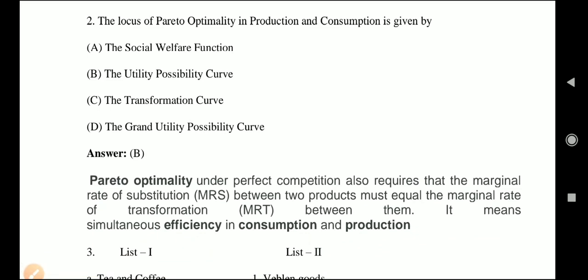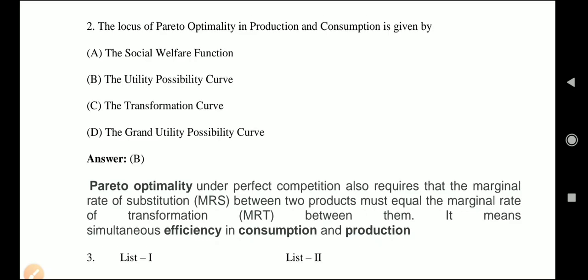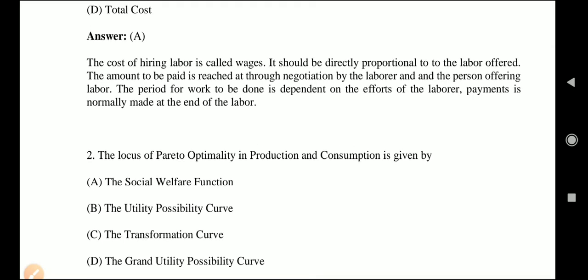Next question: the locus of Pareto optimality in production and consumption is given by — the locus means a point or set of points. If we talk about the locus of Pareto optimality in both production and consumption, which of the following gives it?